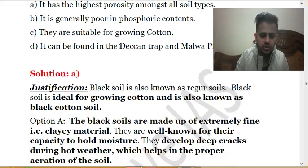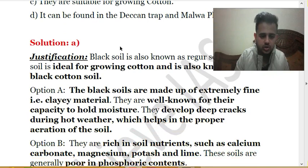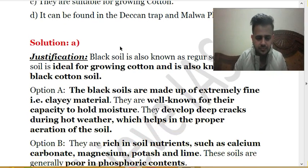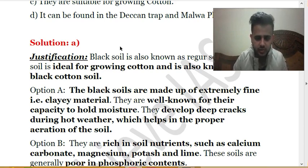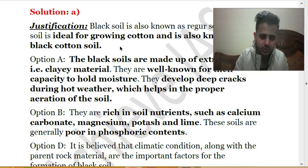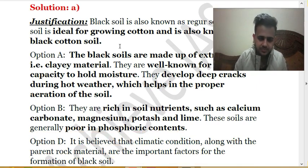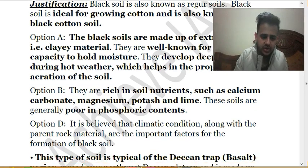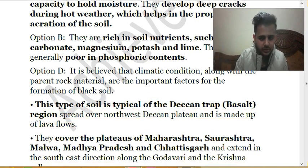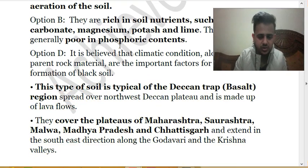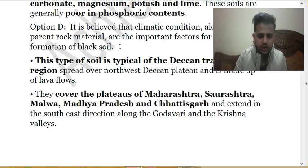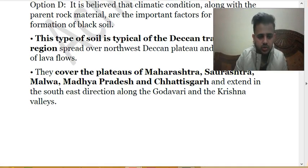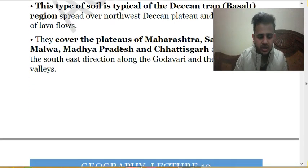Regur soil is ideal for growing cotton and is also known as black cotton soil. It is an extremely fine clay material that retains moisture. In the dry season, moisture moves out and deep cracks develop, allowing aeration of the soil. This soil is rich in nutrients like calcium carbonate, magnesium, potassium, and lime, but phosphoric content is poor. It is typical in the Deccan basalt region covering plateaus of Maharashtra, Saurashtra, Malva, Madhya Pradesh, and Chhattisgarh, extending along the Godavari and Krishna valleys.